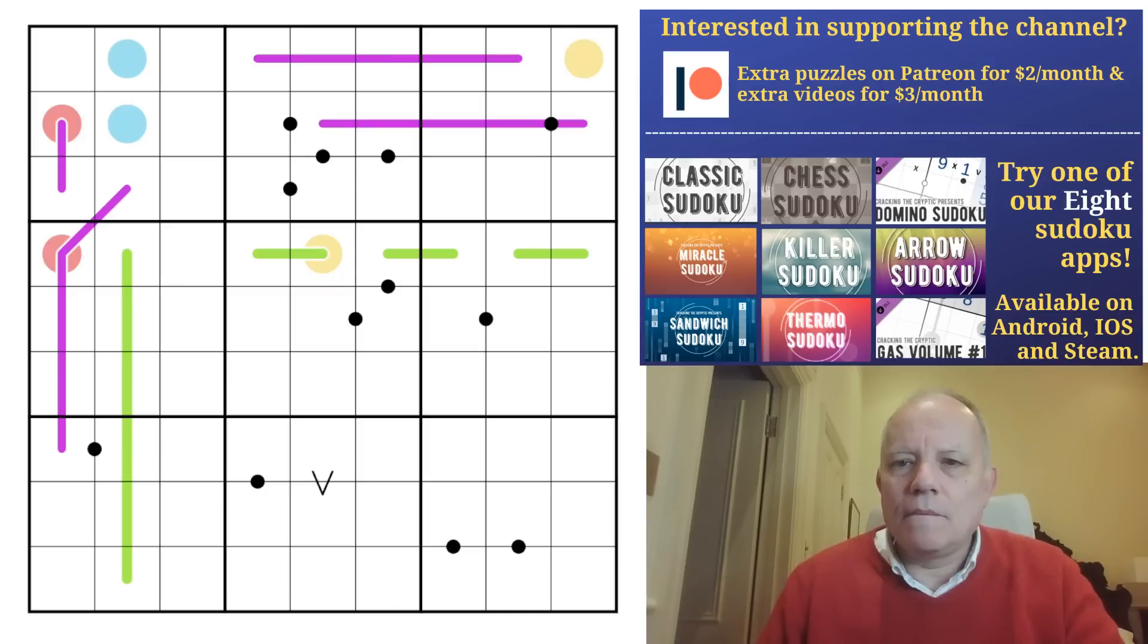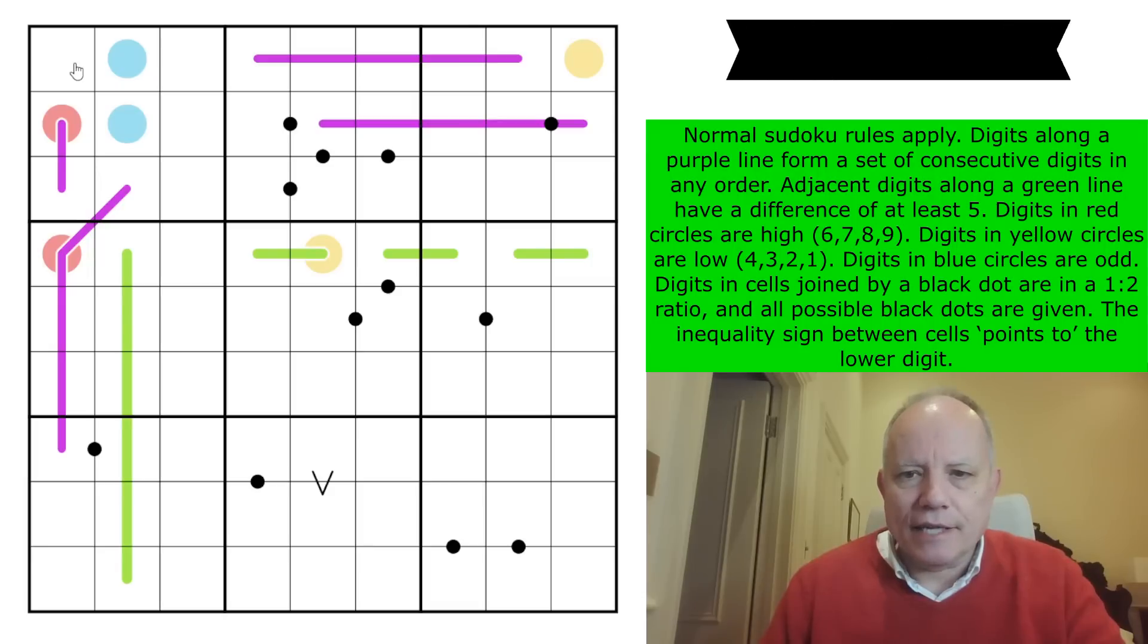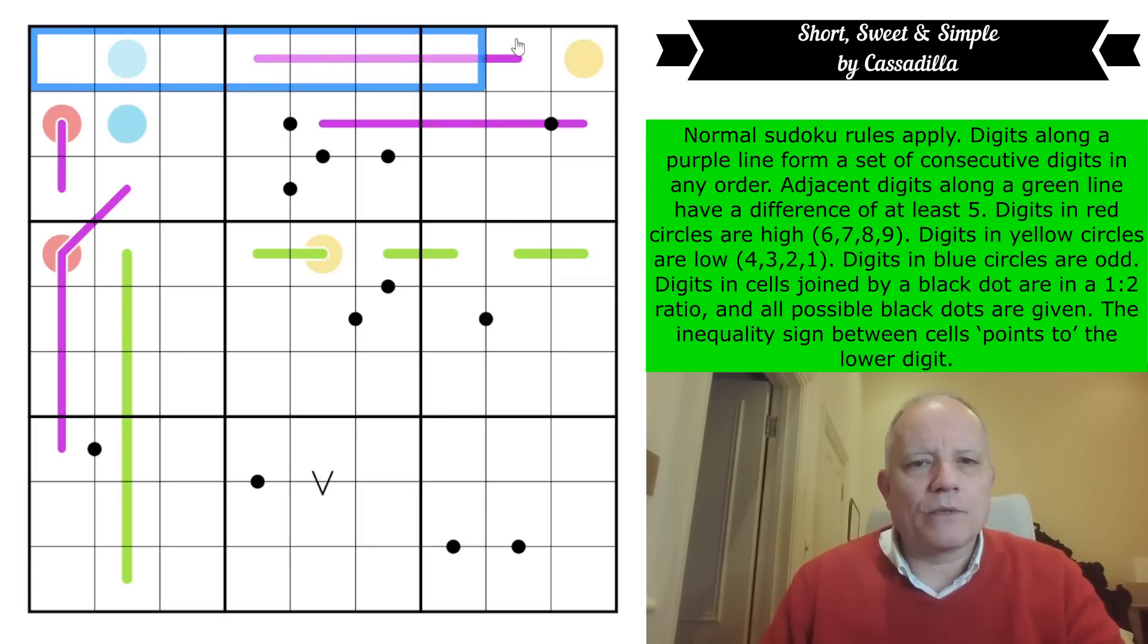Now, I'll do the rules of this and then I'll just do a few bits of intro and then we'll get on with it. So normal Sudoku, there's quite a lot of markings in the grid and we don't necessarily advise you to do a lot of different rule sets in your first Sudoku. But that was a very nice letter from Cassadilla. Anyway, normal Sudoku rules apply. That's one to nine in every row, every column and every three by three box. Digits along a purple line form a set of consecutive digits in any order. That's the Renban rule. So we could have eight, six, five, four, seven on that one, for instance. A set of consecutive digits in any order.